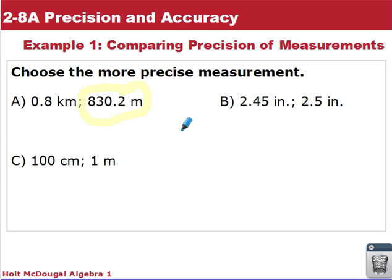For B, we have 2.45 inches or 2.5 inches. Again, here we went to the hundredths, 2.45 inches is more precise.